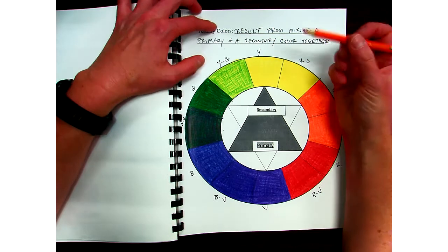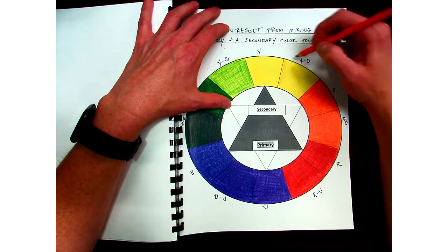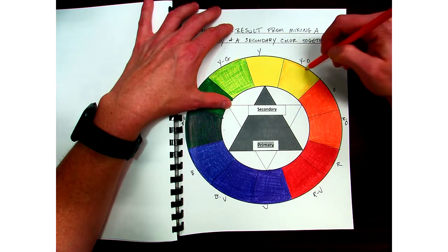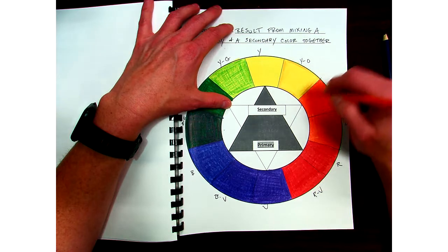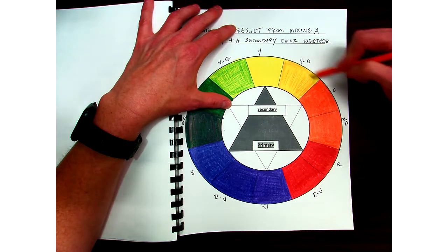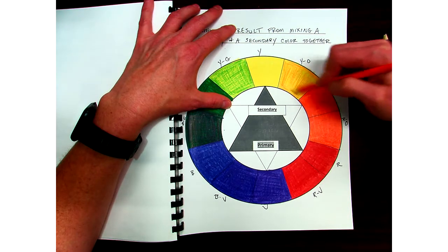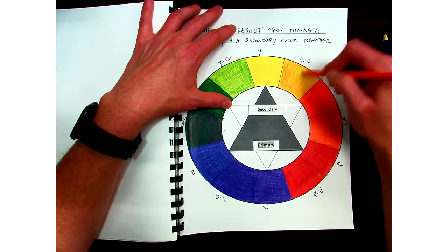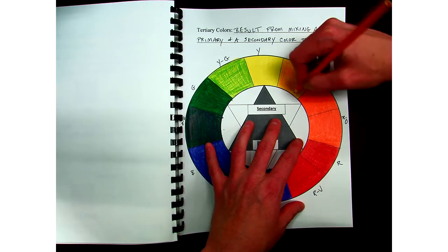I'm going to do the same thing with yellow orange. I'm going to take the secondary color orange this time and put it over the yellow that's already there. Try and stay inside the lines as best as you can. I'm going to get a nice even layer of orange over top of that. I always try and go both ways with my colored pencil to make the value a little bit more even, the amount of pigment that you're adding on there a little bit more even.